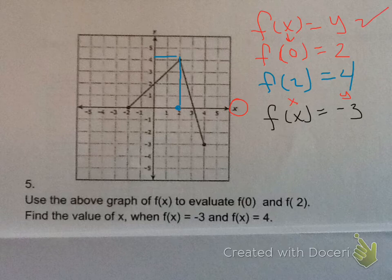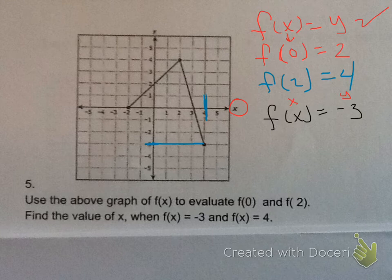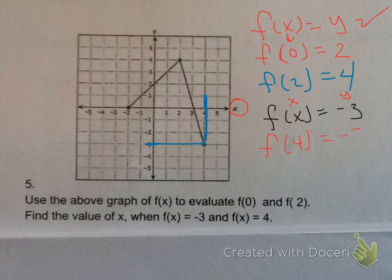So I'm going to go where y is -3. So y is -3 right here. And I'm looking for the x value, so I'm going to go here until it touches it, and when it does, you can see that the x value it's touching is at 4. So I'm going to write this out here. So f(4) is going to equal -3, so x equals 4.